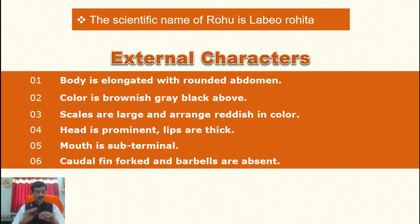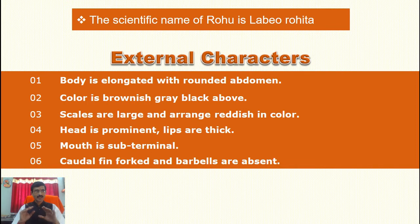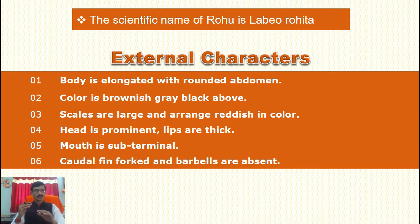About the external characters: the scientific name of Rohu is Labeo rohita. The body is elongated with a rounded abdomen, generally 45 to 60 cm in length. Color is brownish-grey, black above. Scales are large and reddish in color. Head is prominent. Lips are thick. Mouth is subterminal, meaning the upper jaw is longer than the lower jaw.